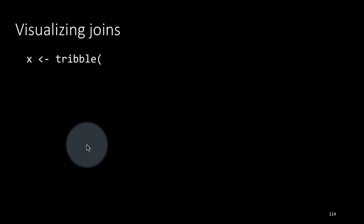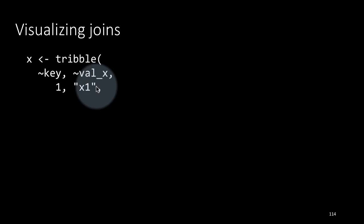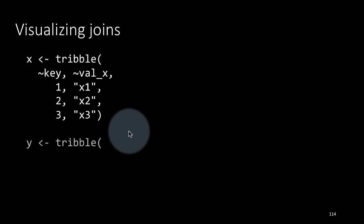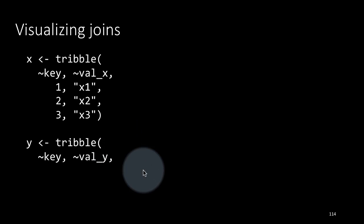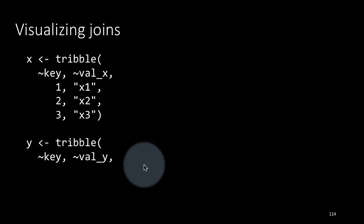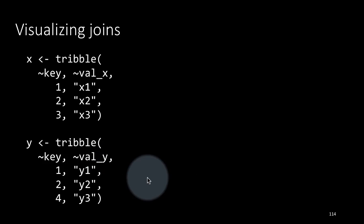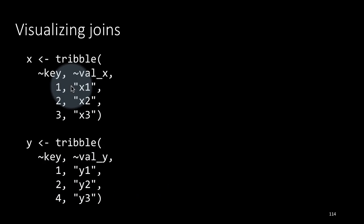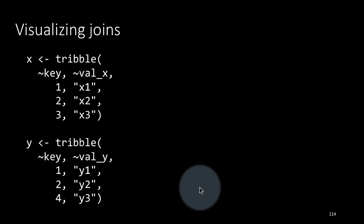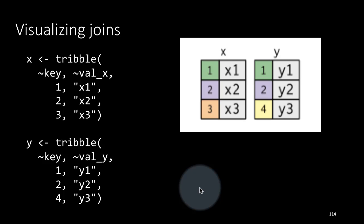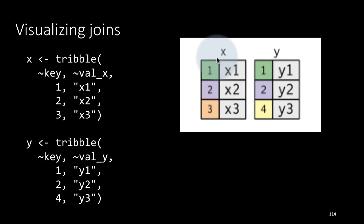To learn about the other kinds of joins, it's useful to have a way of visualizing them. Let's create two tables: x is a table with columns key and val_x, with keys 1, 2, 3 and values x1, x2, x3. Table y also has a column called key and its value column is val_y, with values y1, y2, y3 and keys 1, 2, 4. So keys 1 and 2 match, while 3 and 4 are mismatches — this helps us visualize the joins. The colored column in the diagram is the key column we will be joining by.